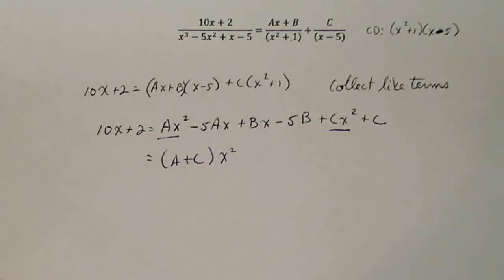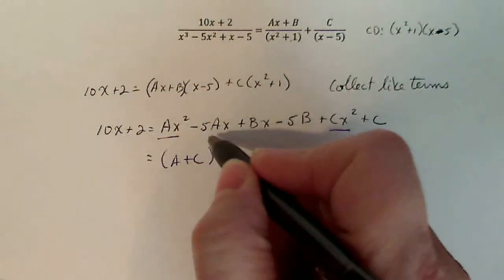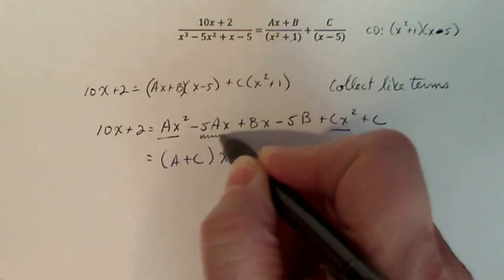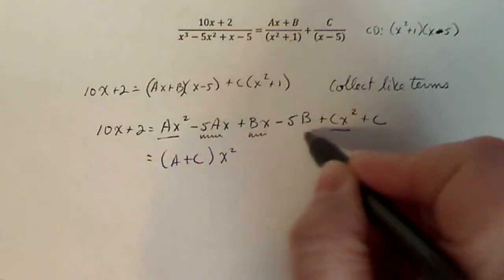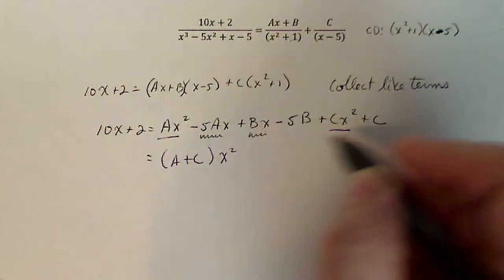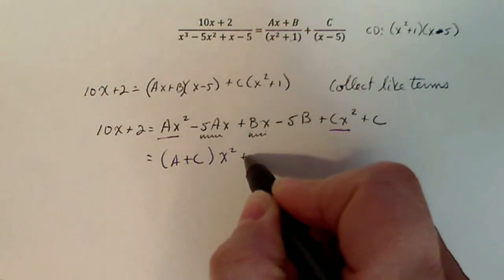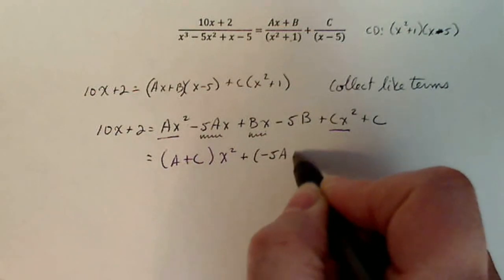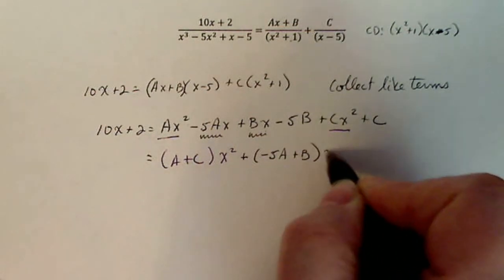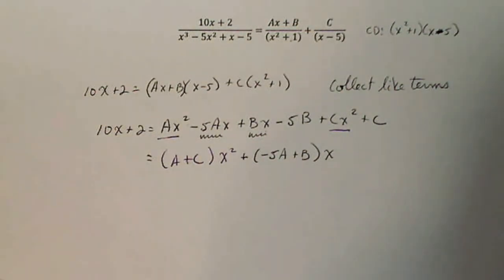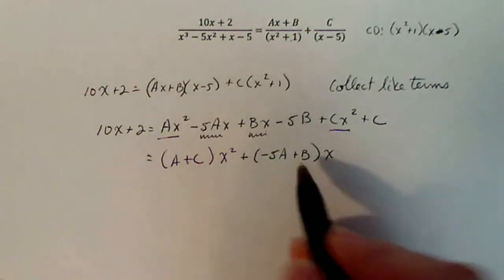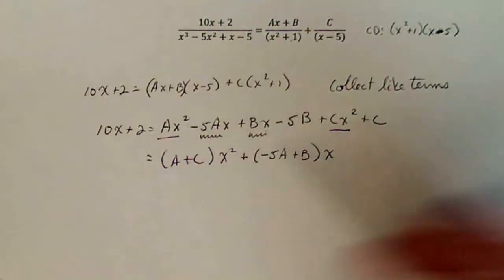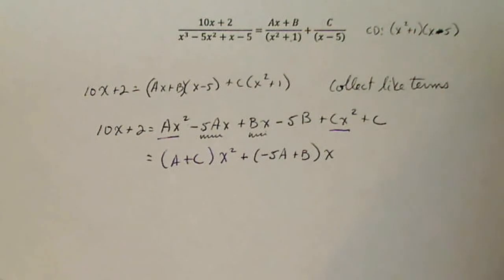Now the next one, let's do the x term. So this is an x term and this is an x term and I don't see any other x terms over here. So I'm going to say plus minus five a plus b times x. Notice I can't do anything with those coefficients. Normally, if I knew that a was two and c was three, I'd write five x squared, but I don't know that. So I have to leave it like this.